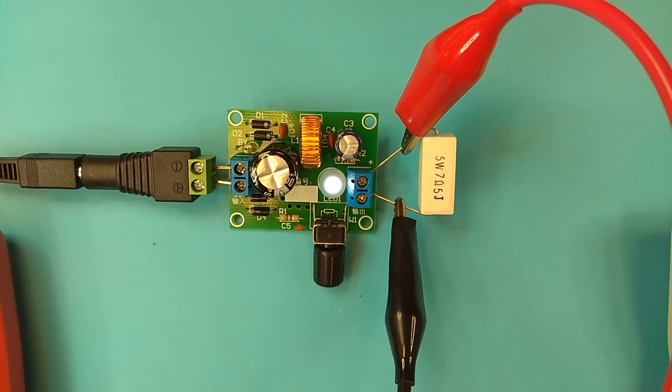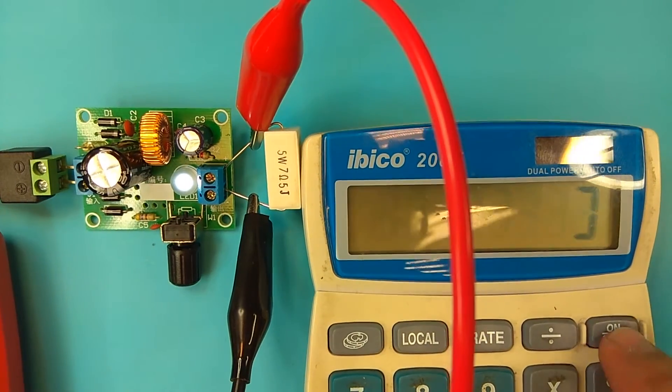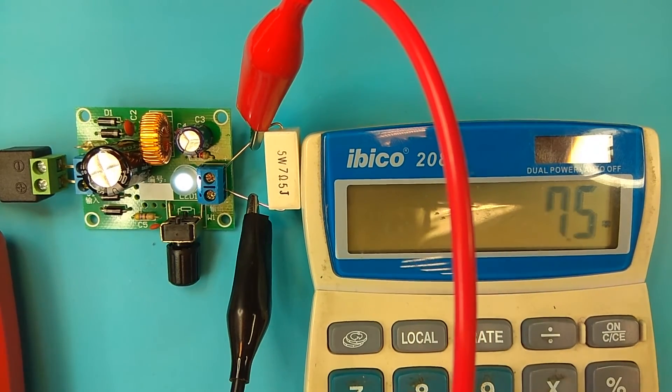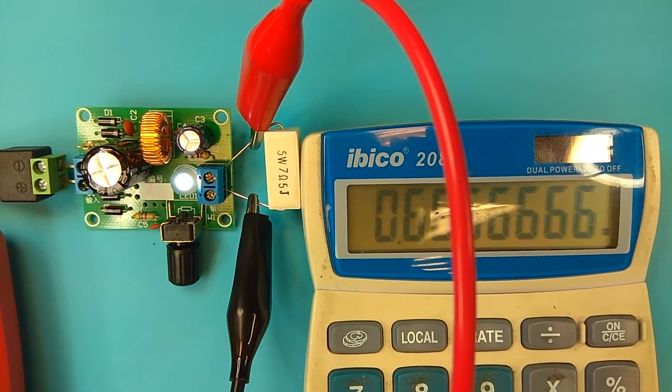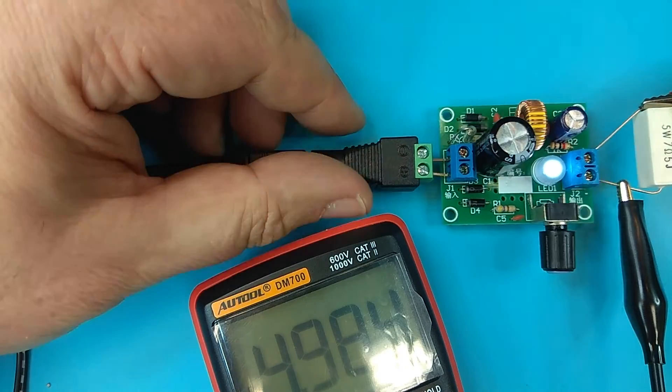And calculate the current. The current is 5 divided by 7.5, is 2 thirds amps. Yes. The next step is to see it on an oscilloscope.